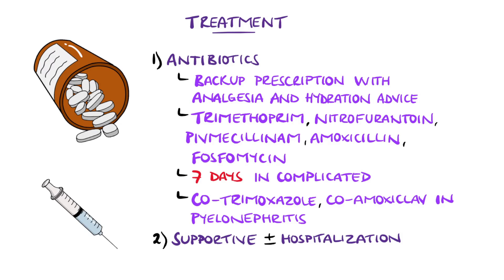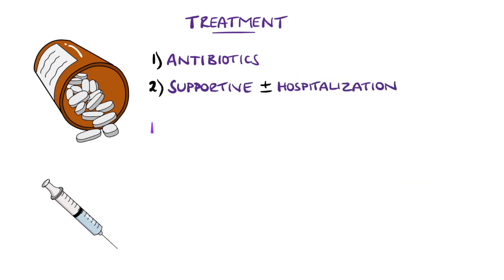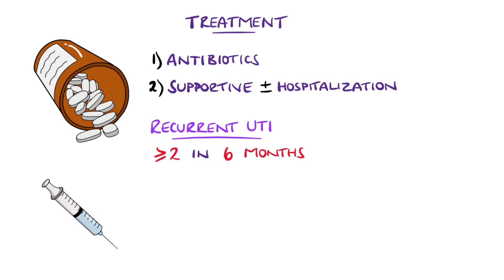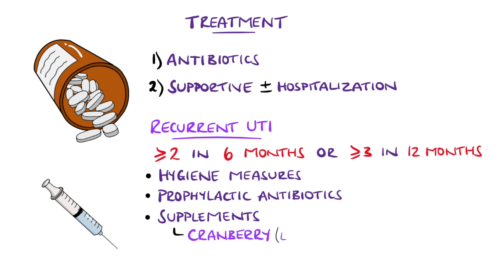Recurrent UTIs are defined as more than two UTIs in six months or three in twelve months, and patients should be advised measures such as hygiene advice and prophylactic antibiotics, with further investigation in some cases to rule out underlying predisposition including malignancy.